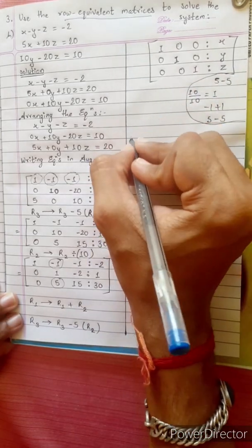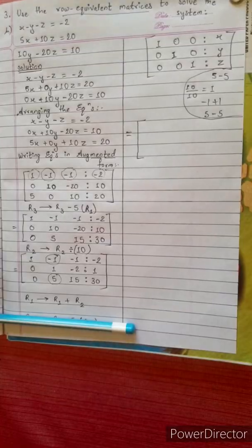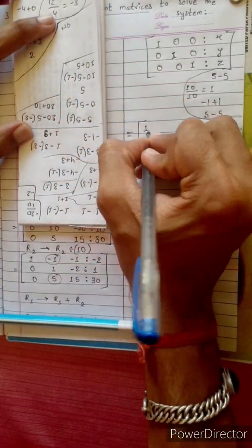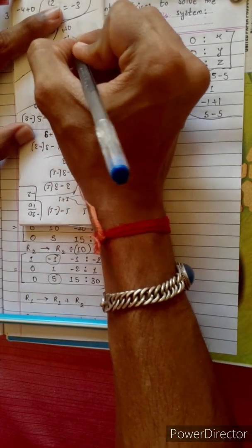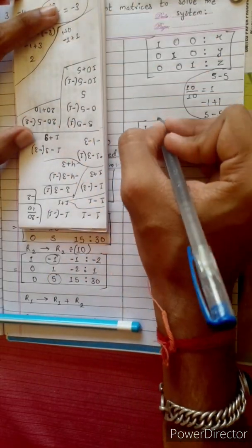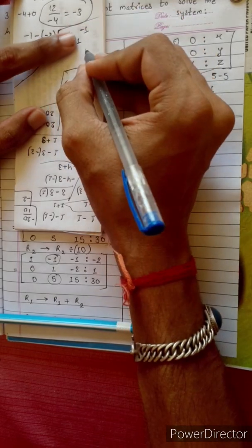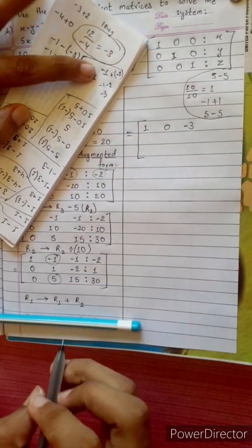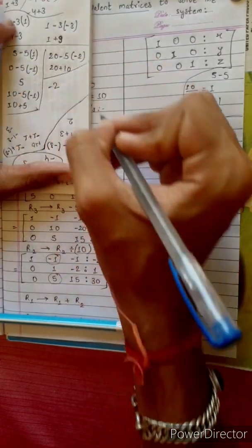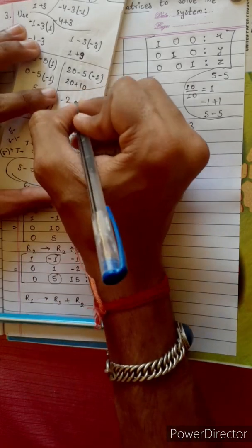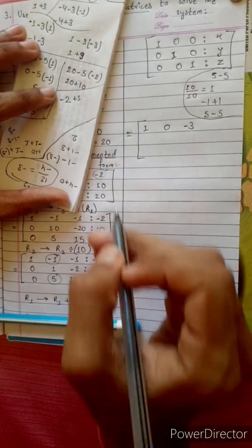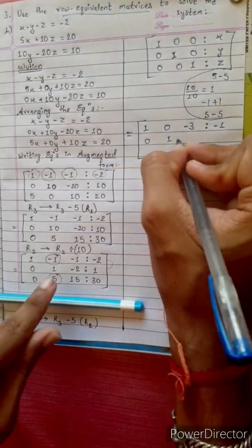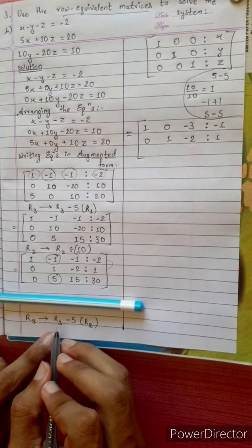Applying R1 plus R2: R1 is [1, -1, -1 | -2], R2 is [0, 1, -2 | 1]. So new R1: 1 plus 0 is 1; minus 1 plus 1 is 0; minus 1 plus minus 2 is minus 3; minus 2 plus 1 is minus 1. New R2 stays [0, 1, -2 | 1]. For R3 minus 5 times R2: first element 0 minus 5 times 0 is 0.